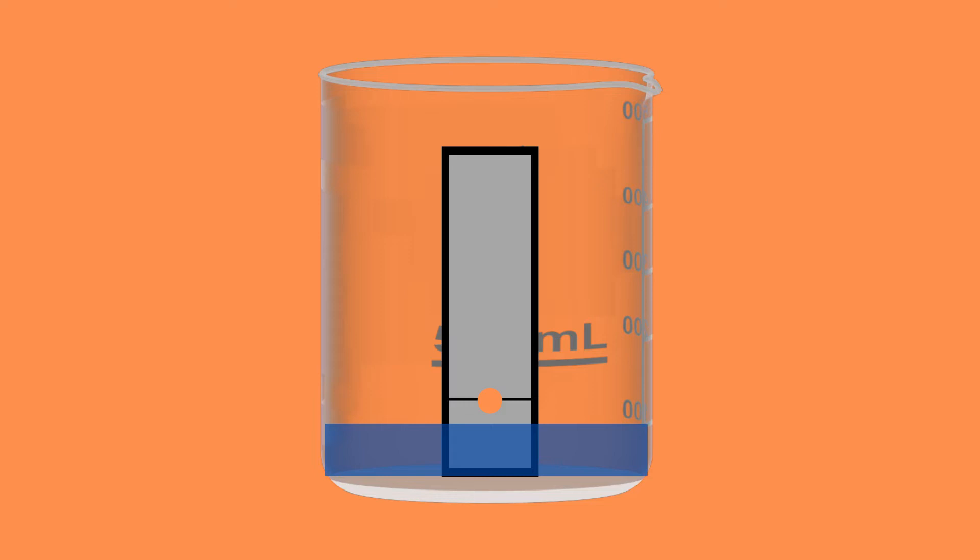Now let us take a look at what this looks like in reality. So here we have a very basic setup for a thin layer chromatogram. A pencil line has been drawn near the bottom of the TLC plate and a small drop of sample solution has been placed on this line and marked.